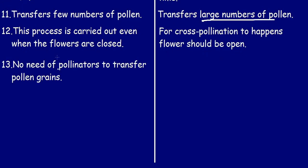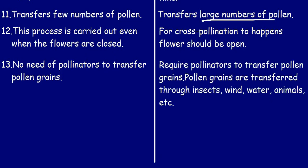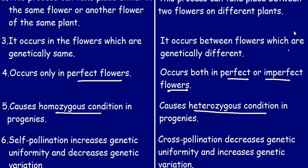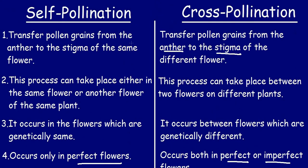The thirteenth and last point: self-pollination requires no pollinators to transfer pollen grains. Cross-pollination requires pollinators to transfer pollen grains — pollen grains are transferred through insects, wind, water, and animals. These were the differences between self-pollination and cross-pollination.